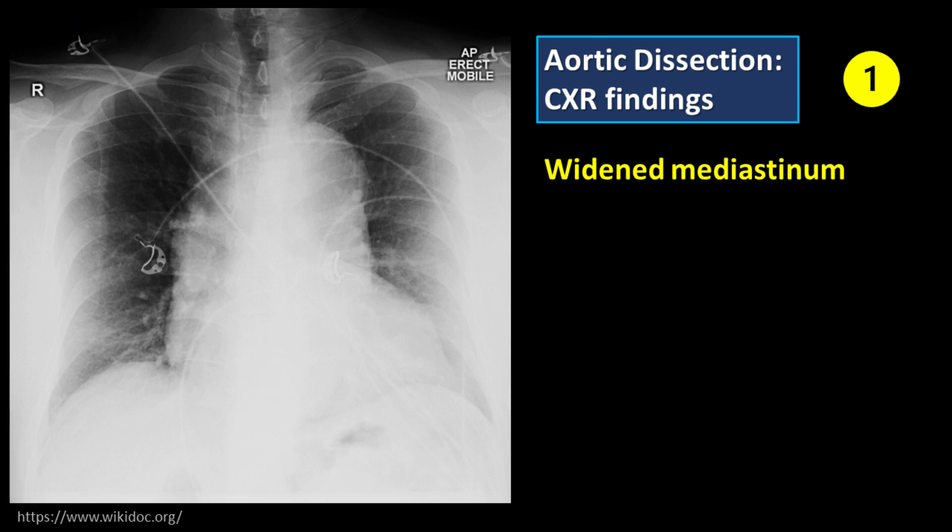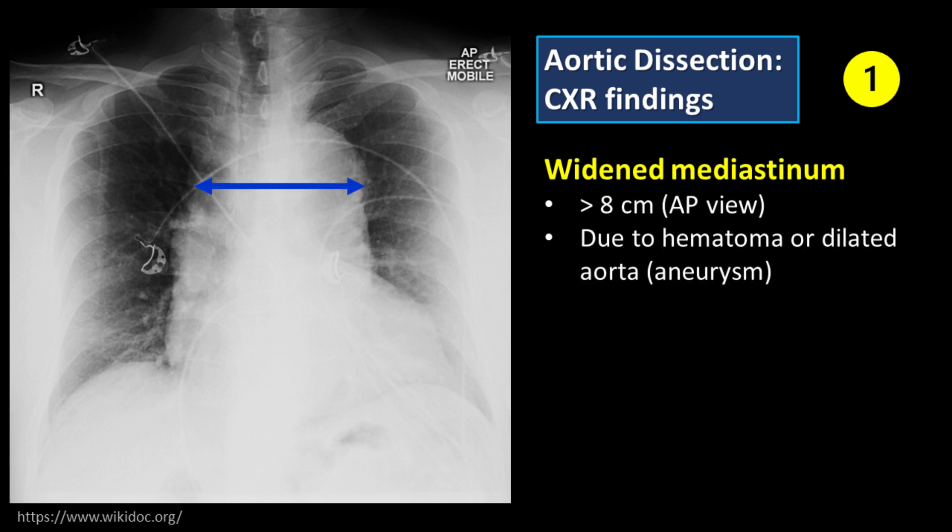Feature number 1: Widened mediastinum. Widened mediastinum refers to mediastinal width greater than 8 cm in AP view. This may be due to mediastinal hematoma or dilated aorta.